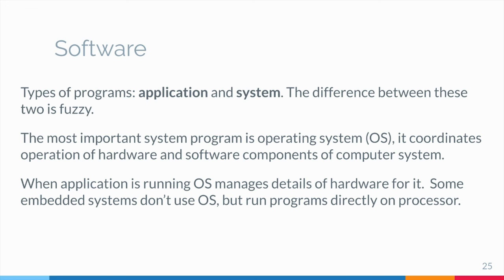Often times it is more a matter of marketing than of logic. The most important systems program is the operating system. The operating system is always present when a computer is running. It coordinates the operation of the other hardware and software components of the computer system. The operating system is responsible for starting up application programs, running them, and managing the resources that they need.